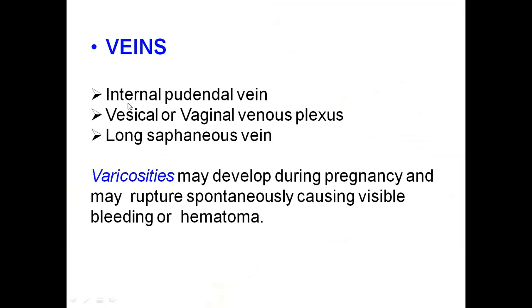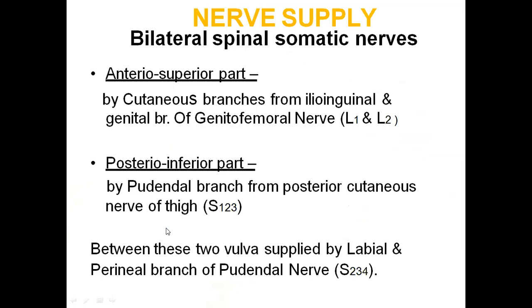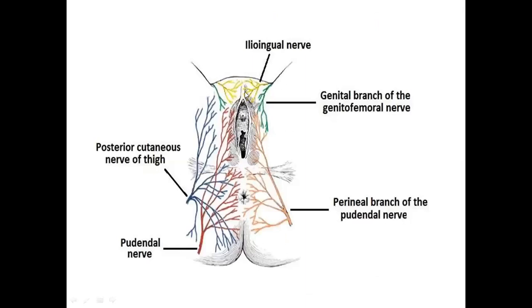Venous drainage goes to the internal pudendal vein, vaginal venous plexus, and long saphenous vein. If these veins become tortuous due to high pressure, as seen in pregnancy, they may rupture spontaneously causing visible bleeding or hematoma. Coming to the nerve supply: bilateral spinal somatic nerves supply the vulva. The anterior superior part is supplied by cutaneous branches from the ilioinguinal nerve and the genital branch of the genitofemoral nerve — root value L1, L2. The posteroinferior part is supplied by the pudendal branch from the posterior cutaneous nerve of the thigh — root value S1, S2, S3. Between these two regions, the vulva is supplied by the labial and perineal branches of the pudendal nerve — root value S2, S3, S4.